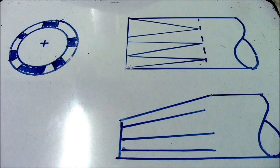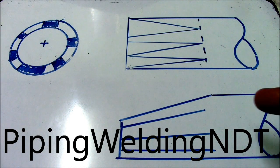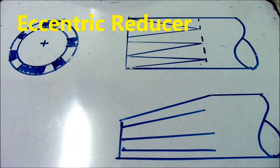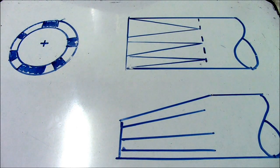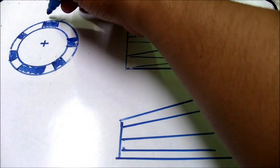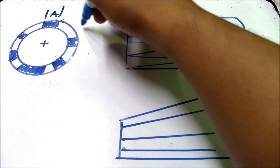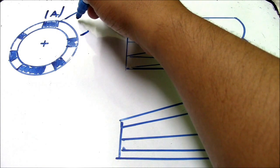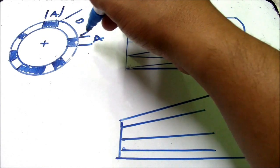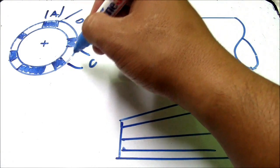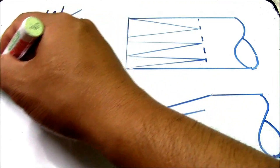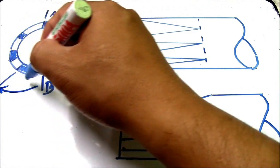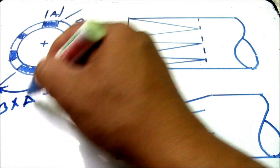Hi guys, welcome back to the Piping Welding and NDT channel. This is an eccentric reducer — here is the picture of an eccentric reducer. I will show you the formula to lay out this eccentric reducer. We have letters A, D, A, C, A, B, and this is 3 multiplied by A.